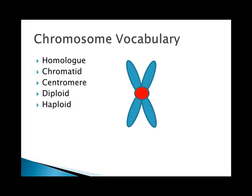Homologous chromosomes are chromosomes that match in structure, with the exception of the sex chromosomes in a human male. They are each member of a numbered pair of chromosomes — so each member of chromosome 15, for example, are homologs of the other. One homolog is inherited from the mother, and the other homolog is inherited from the father.